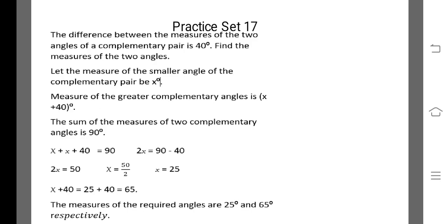The difference between the measures of the two angles of a complementary pair is 40. Find the measure of the two angles. Let us consider the measure of the smaller angle of the complementary pair be x, and the measure of the greater angle to be x plus 40.